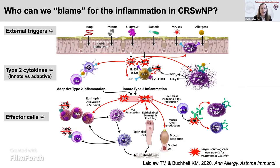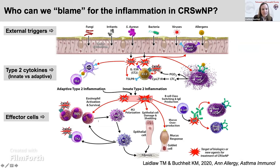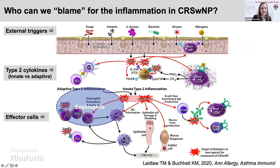In terms of who we blame for the inflammation, there are a lot of players in this complex system. Potential external triggers can lead to epithelial cell dysregulation — which is markedly dysregulated in nasal polyposis — leading to production of innate type 2 cytokines as well as adaptive type 2 cytokines. A variety of effector cells are involved: eosinophils, TH2 cells, mast cells, B cells, and basophils are all likely involved. I'm going to focus on eosinophils and anti-IL-5 treatment. As allergist immunologists, we've been taught these anti-IL-5 drugs are really anti-eosinophil, but I'll present data suggesting they likely do more than that.